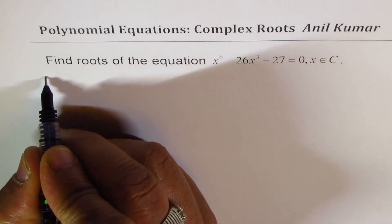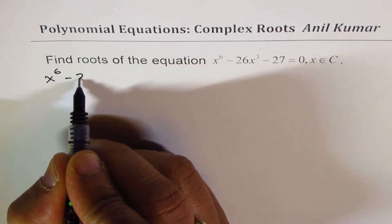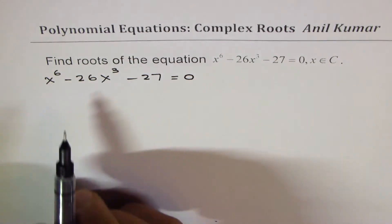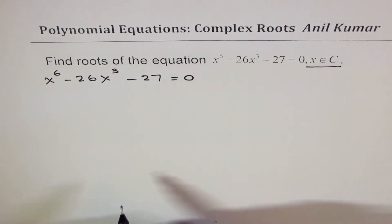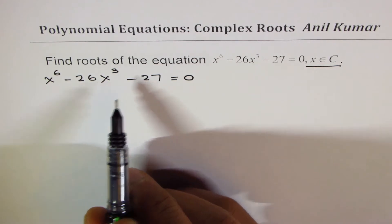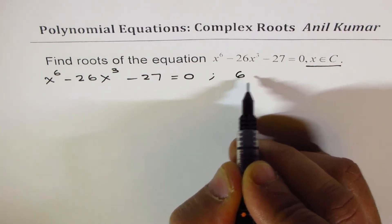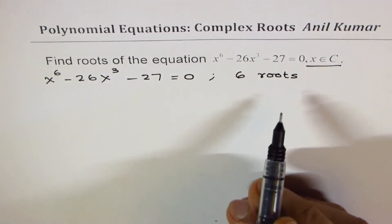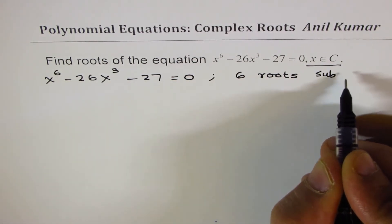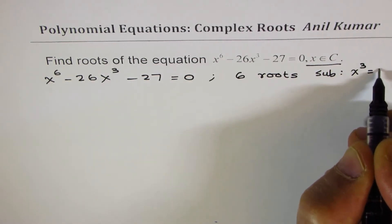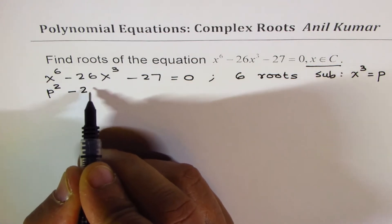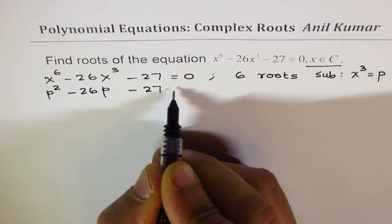Let me rewrite this equation: x to the power of 6 minus 26x cubed minus 27 equals to 0. Since we are working in the domain of complex numbers — combined real and complex roots — since the degree is 6, we are expecting 6 roots. To solve this equation, we can make a substitution: let x cubed equal p. In that case, we get a quadratic equation: p squared minus 26p minus 27 equals to 0.